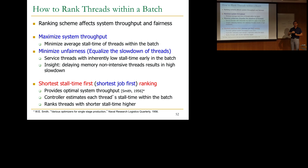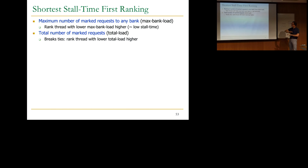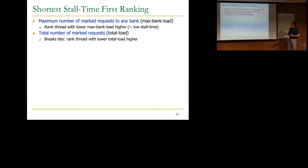We estimate shortest stall time based on the maximum bank load — what is the maximum number of marked requests to any bank. Assuming requests are serviced in parallel, the maximum number of requests to any bank within a batch dictates your stall time. We want to rank the thread with lower max bank load higher, because it should have a lower inherent stall time. If two threads have the same maximum number of requests to any bank, we break the tie using total load — the total number of marked requests across all banks — ranking the thread with lower total load higher.